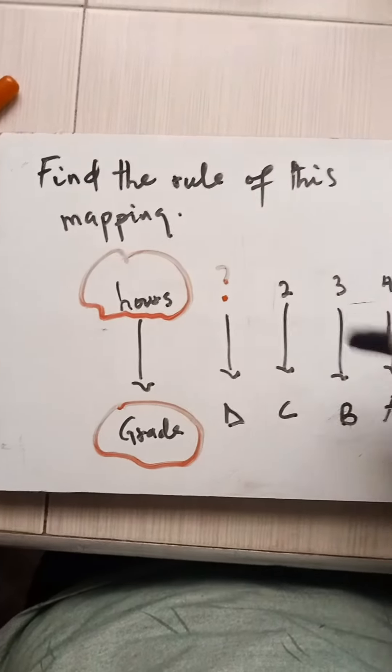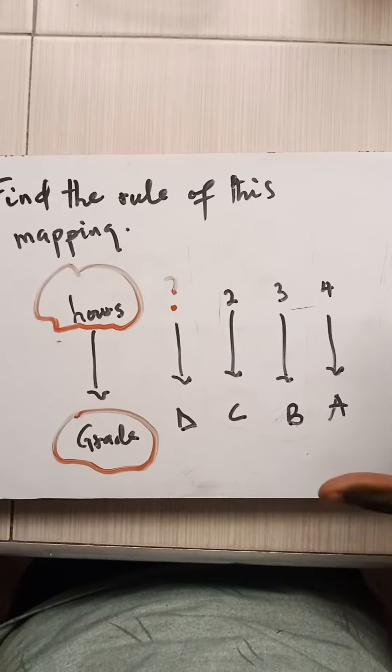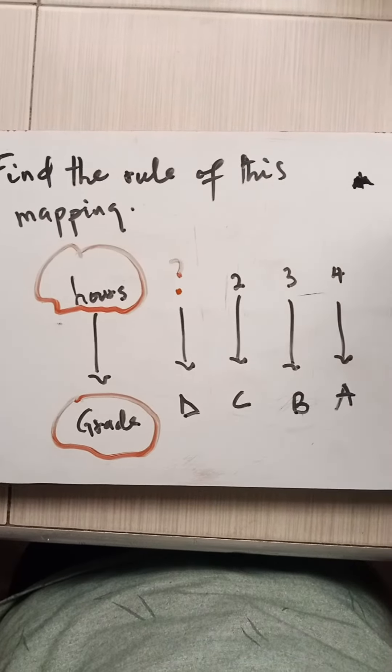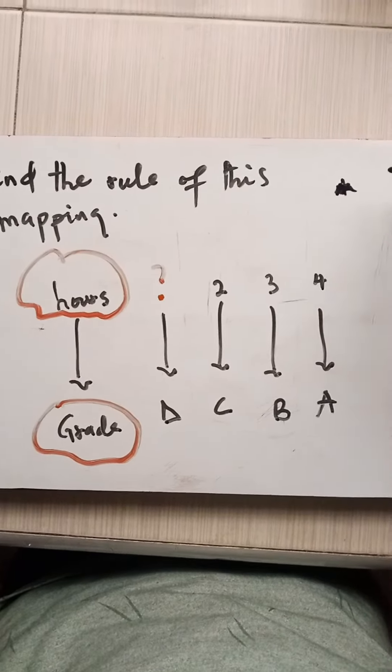Find the rule of this mapping. So this is the mapping that we are given, and I believe most of you know the types of mapping that we have, that's linear,